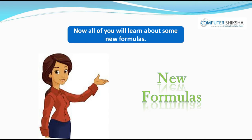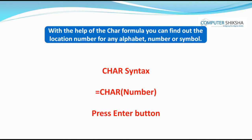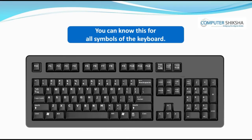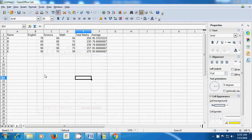Now all of you will learn about some new formulas. Let's learn about the CHAR or character formula. With the help of the CHAR formula, you can find out the location number for any alphabet, number, or symbol — you can know this for all symbols of the keyboard. With the character formula, you can find out which character lies at a particular number that you give in the formula.